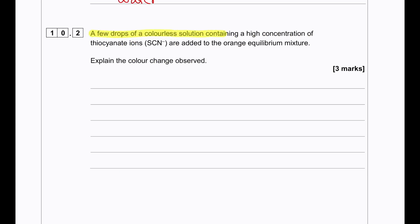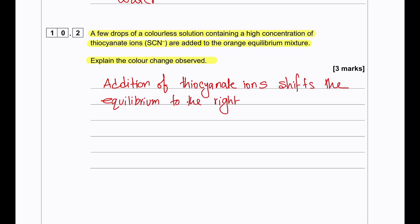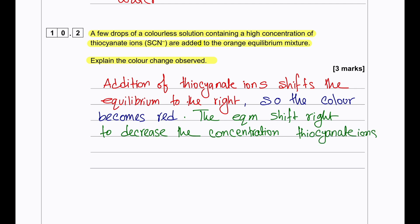A few drops of colorless solution containing a high concentration of thiocyanate ions are added to the orange equilibrium mixture. Explain the color change that is observed. When we're going to add the thiocyanate ions, the equilibrium mixture will shift towards the right, which will produce more red because it increases the concentration of thiocyanate ions, iron thiocyanate ions. And the equilibrium wants to decrease the concentration of the thiocyanate ions.